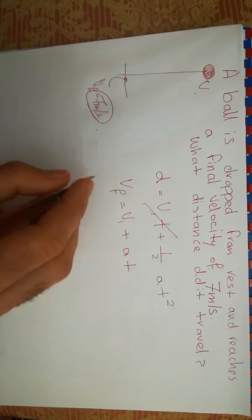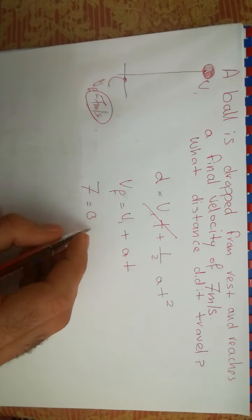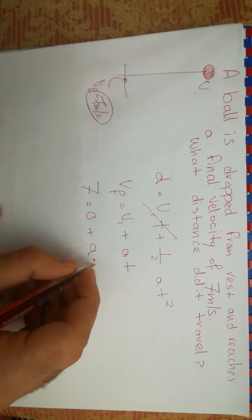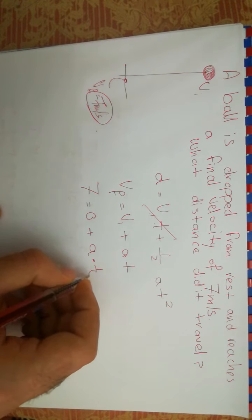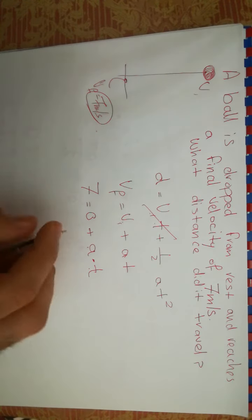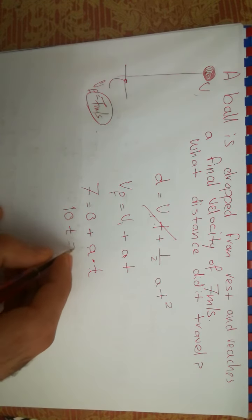And so what is the final velocity? That is 7. And the initial velocity is 0 plus acceleration multiplied by time. And so we have acceleration times time is equal to 7. What is the acceleration? Acceleration due to gravity is 10. So we have 10*t is equal to 7.